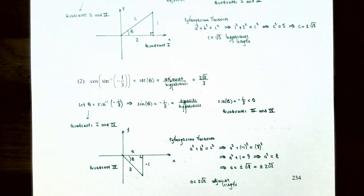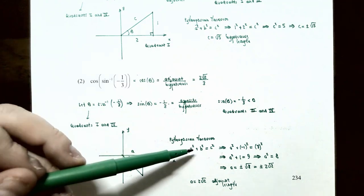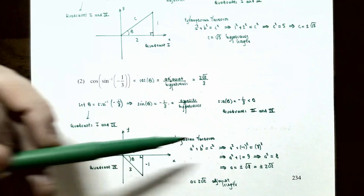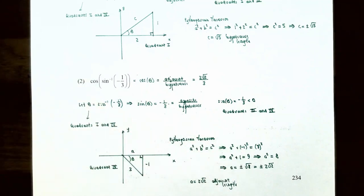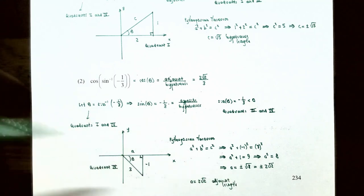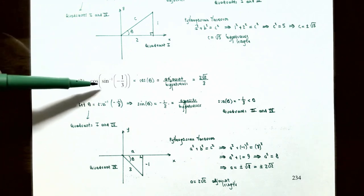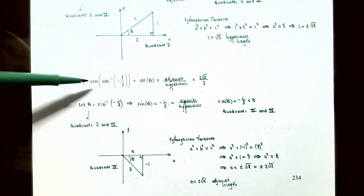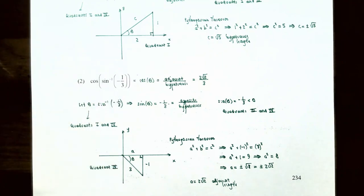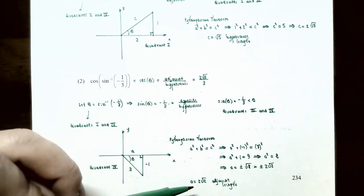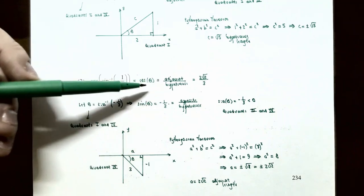We need to find the missing adjacent side, call it A. Using the Pythagorean theorem: A squared plus negative one squared equals three squared, so A squared plus one equals nine, giving A squared equals eight, and A equals plus or minus two square root two. Since A represents a positive horizontal distance in quadrant four, A equals positive two square root two. Cosine of inverse sine of negative one-third equals cosine of theta, which is adjacent over hypotenuse: two square root two divided by three.